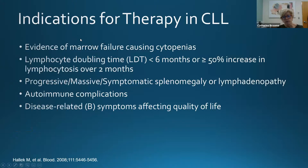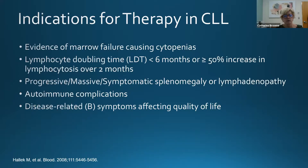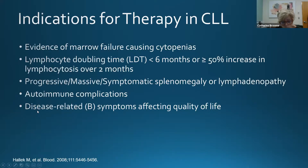We treat CLL when bone marrow involvement causes anemia or thrombocytopenia, when the doubling time of the absolute lymphocyte count is less than six months, or when there's more than a 50% increase in lymphocytes over two months. Symptomatic splenomegaly or lymphadenopathy, autoimmune anemia or thrombocytopenia, or significant night sweats, weight loss, and fatigue affecting quality of life are also treatment indications.